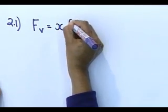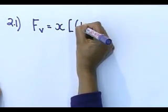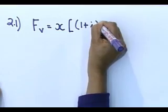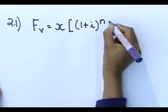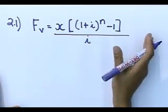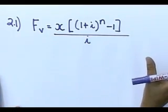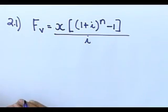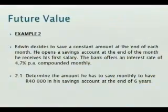It's x, open up the bracket, 1 plus i to the power of n minus 1 over i. Everybody, you wrote down that formula. You've got the example written down. It says he decides to save a constant amount at the end of each month. He opens up a savings account and he gets 4.7% per annum interest rate, compounded monthly.